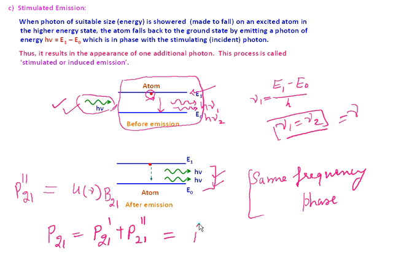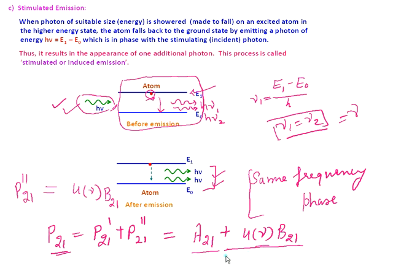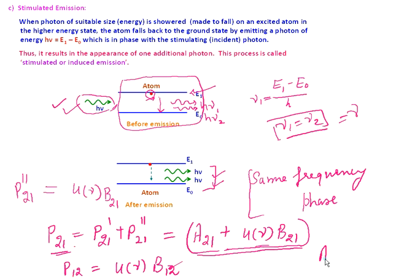So P21 equals A21 plus U-nu times B21, where P21-prime is the Einstein coefficient A21 for spontaneous emission, and P21-double-prime is U-nu times B21 for stimulated emission. The transition probability P12 for absorption was U-nu times B12. Here U-nu is the density of the incident radiation, and A and B are Einstein coefficients: A21 for spontaneous emission, B12 for absorption, and B21 for stimulated emission. These three coefficients provide information about the characteristics of the energy level.